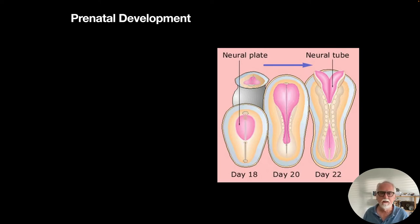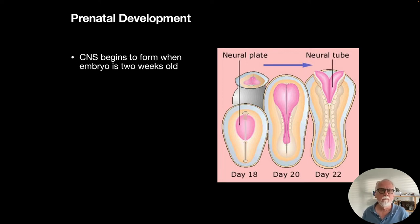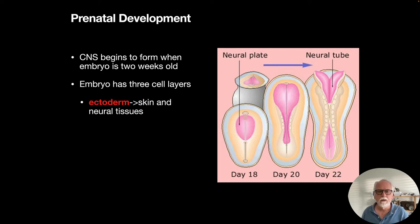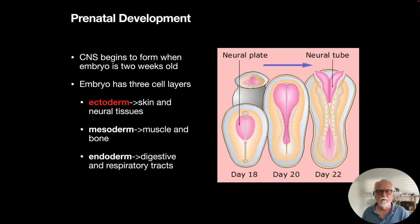Let's look at development of the brain all the way back to the fetus, specifically what happens around day 18 where a neural plate forms. Around this time when the CNS begins to form, the embryo has three cell layers. One is the ectoderm, where skin and neural tissues eventually arise. We have the mesoderm, where muscle and bone arise.